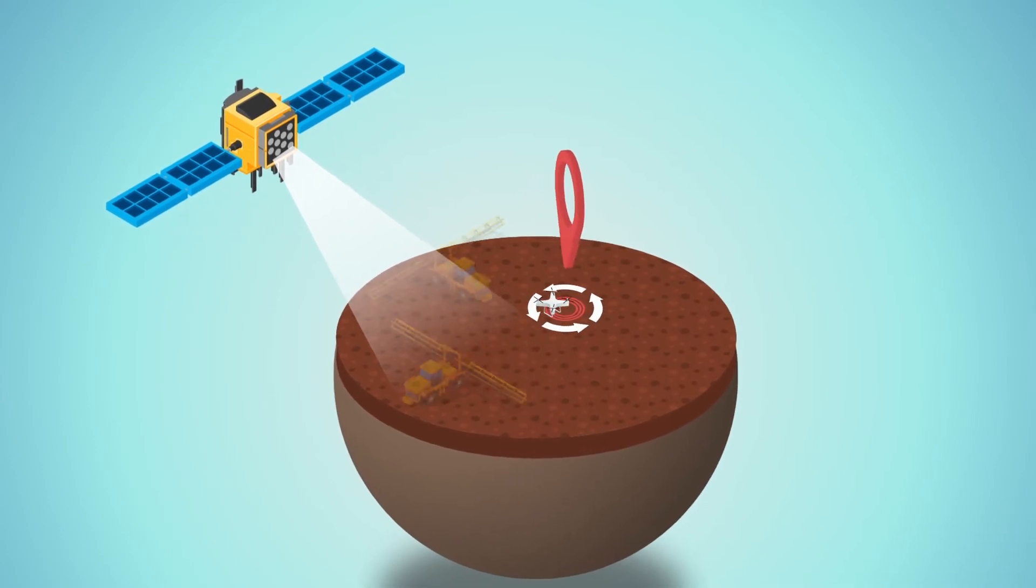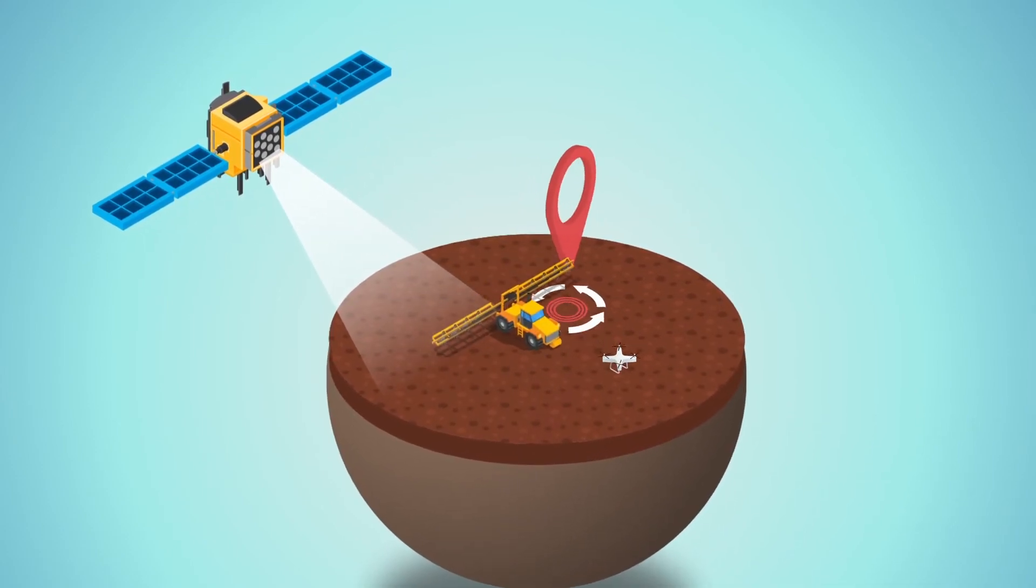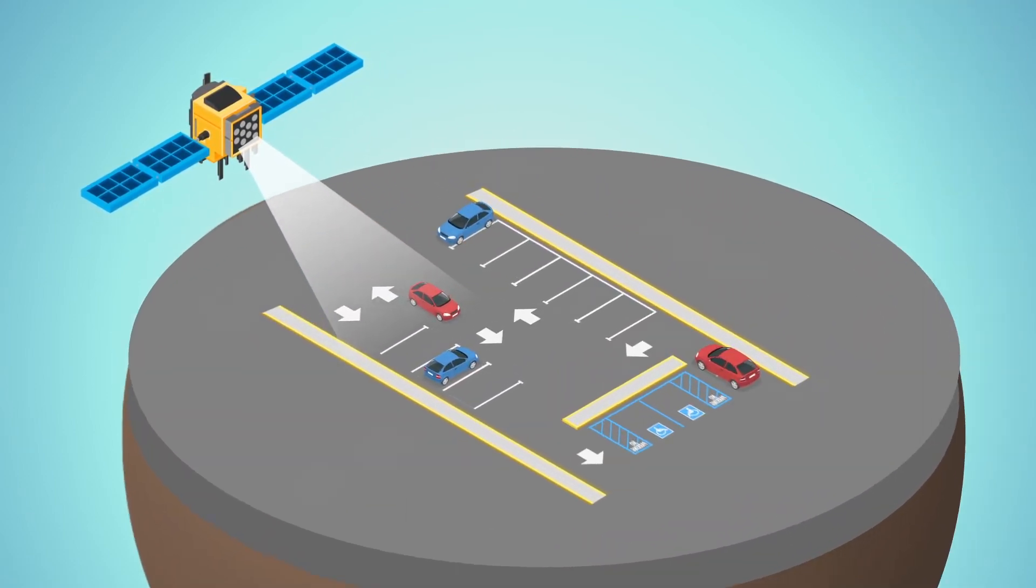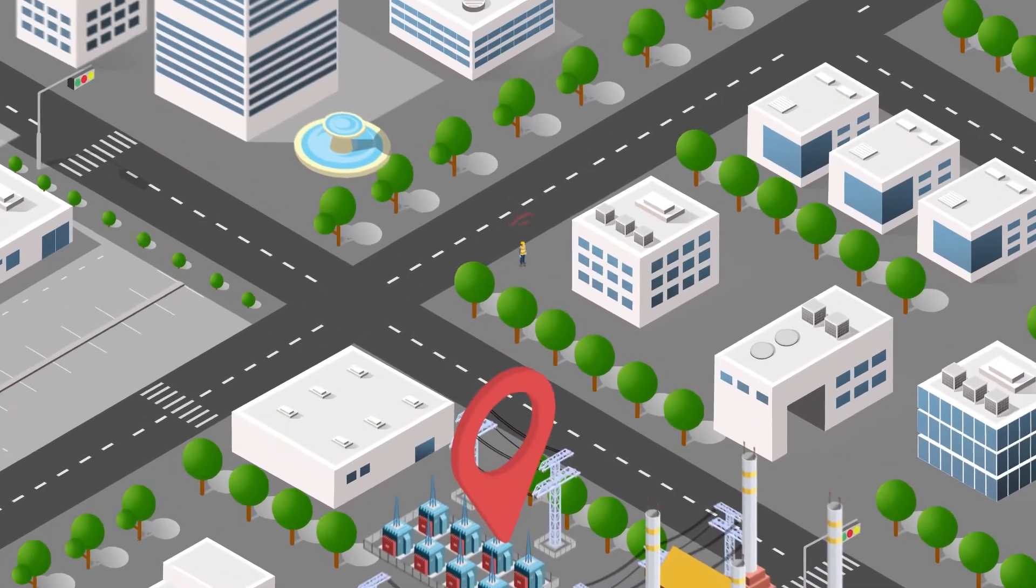Just think of a tractor applying fertilizer exactly where it's needed. Land surveying, paying parking fees based on where you are, navigating in cities using your phone.